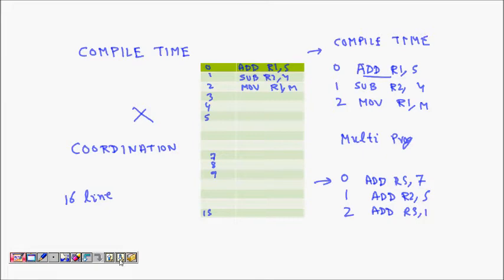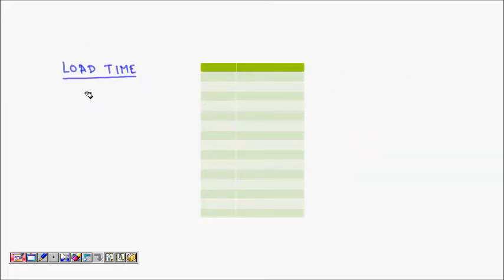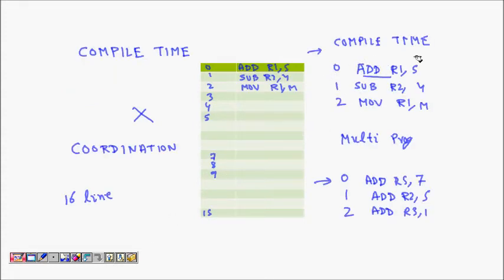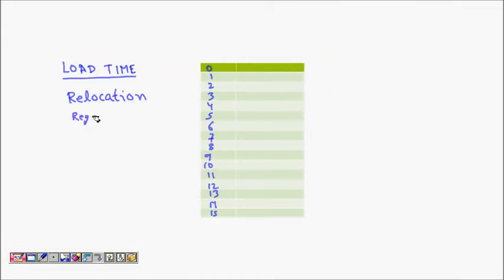The next approach is load-time relocation, which helps solve the collision problem. Here, the compiler still assigns addresses like 0, 1, 2 to lines of code, but when the program is actually loaded into memory, those addresses can be relocated using a relocation register.